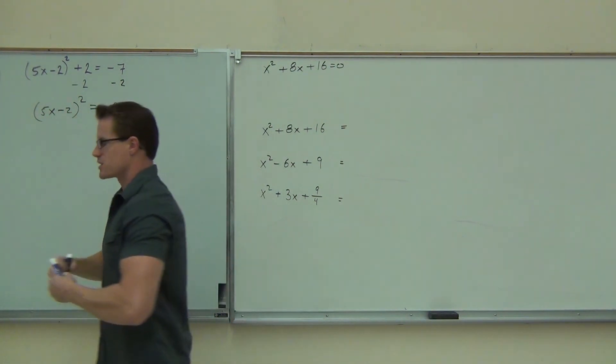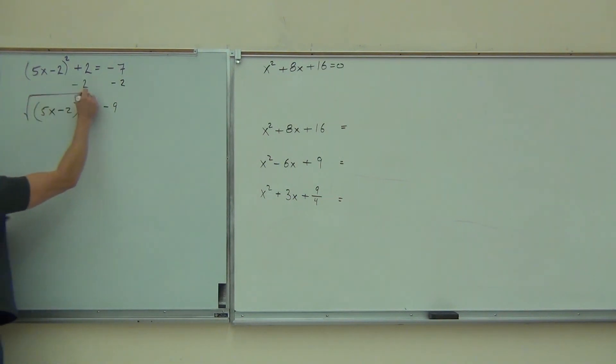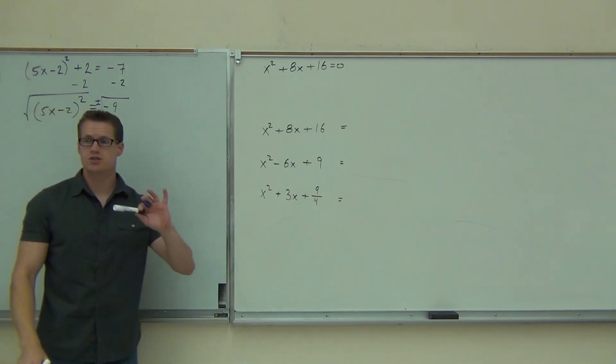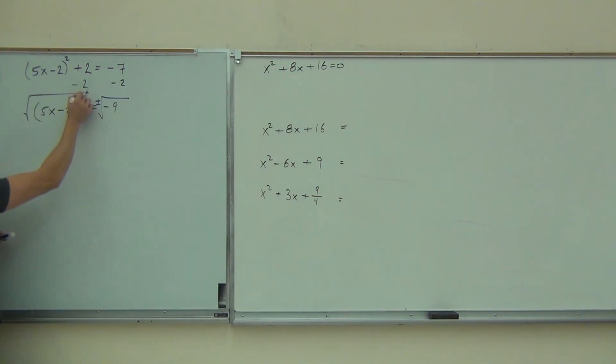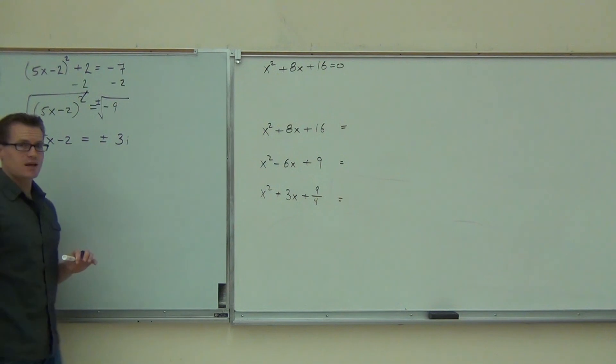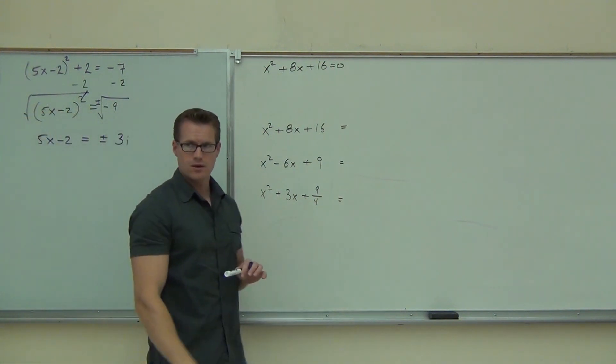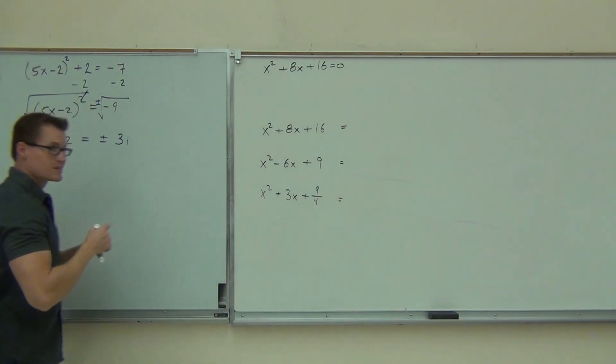That looks a lot better to me. That right there says, okay, I've got something squared. Let's take a square root of both sides, and we're not going to neglect the plus or minus because that gives us our two solutions that we know we're going to have, even though they're going to be complex numbers here. On the left-hand side, we get 5x minus 2. On the right-hand side, you get plus or minus 3i. Did you make it that far, folks? Yes. Good deal.